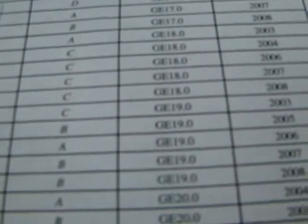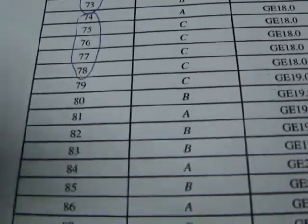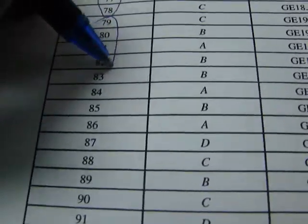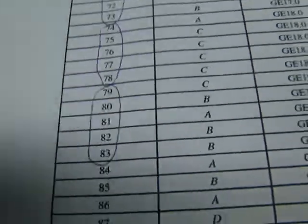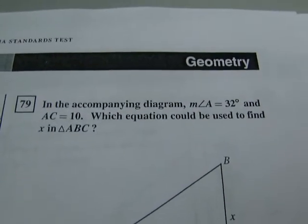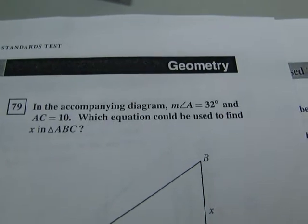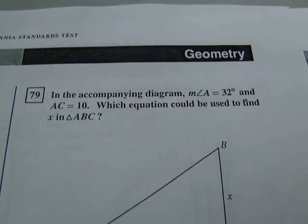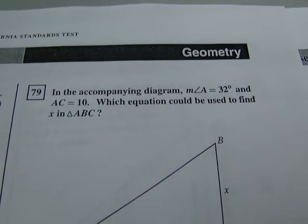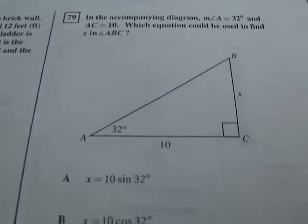The problems associated with Standard 19 are from 79 down to 83. So those are the problems we'll be doing right now. Let's look at 79. In the accompanying diagram, measure of angle A equals 32 degrees and AC equals 10. Which equation would be used to find x in triangle ABC?